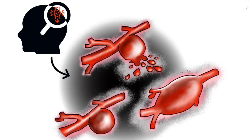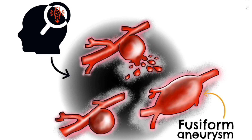Aneurysms can occur in the aorta, the wall of the heart, or within the vasculature of the brain. The latter is what we will be focusing on today, and these are called cerebral aneurysms. The main types of cerebral aneurysms are saccular, fusiform, and microaneurysms.